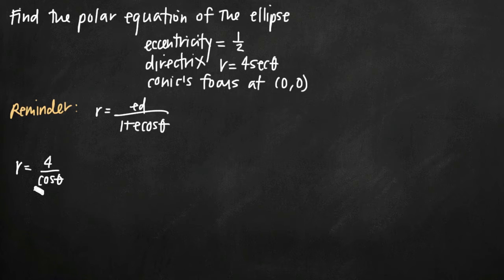Multiplying both sides by cos(θ), we get r cos(θ) = 4. Now we can substitute x for r cos(θ), giving us x = 4. So the equation of the directrix is x = 4.